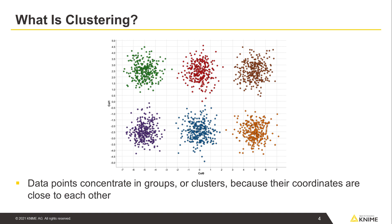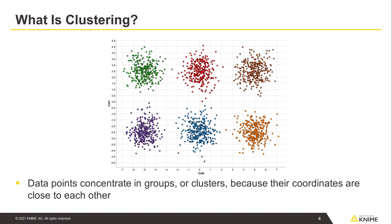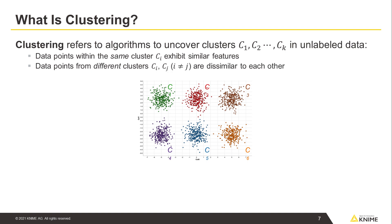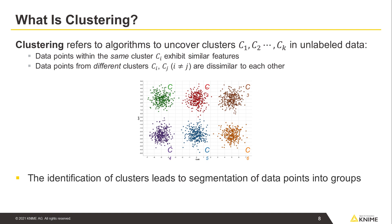These points concentrate in different groups or clusters because their coordinates are close to each other. In this example, spatial coordinates represent two numerical features. But even with many features, the idea of closeness or similarity still applies in a higher dimensional space. Clustering refers to algorithms to uncover such clusters in unlabeled data. Data points belonging to the same cluster exhibit similar features, whereas data points from different clusters are dissimilar to each other. The identification of such clusters leads to segmentation of data points into a number of distinct groups.